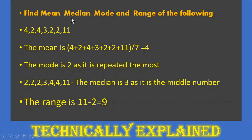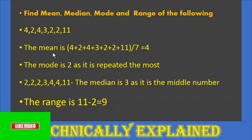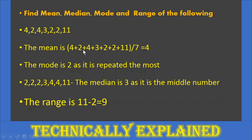Example: Find mean, median, mode and range of the following numbers۔ Mean نکالنے کے لئے سارے numbers کو add کیا — sum لے کر divide by the number of elements۔ اس میں سات elements ہیں — ایک دو تین چار پانچ چھ سات — تو sum کو 7 سے divide کر دیا۔ تو mean آ گیا 4۔